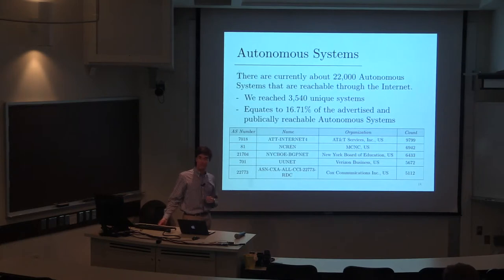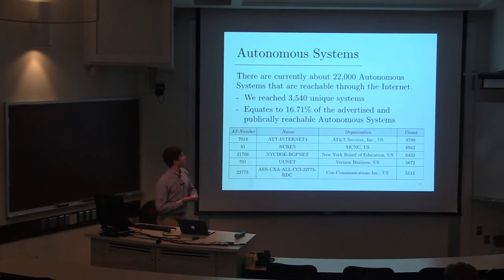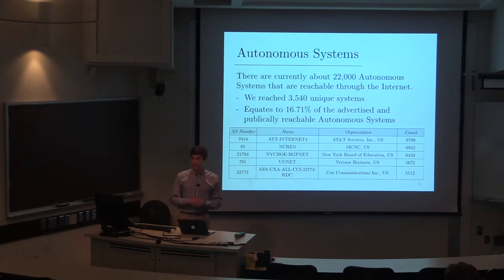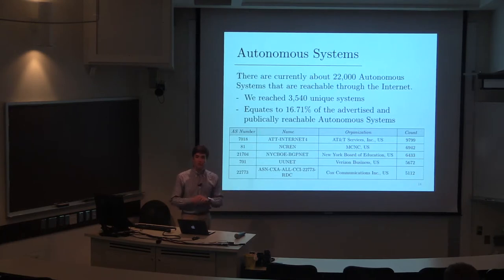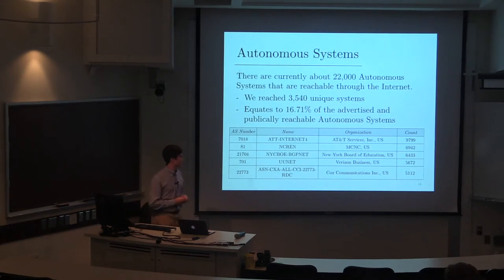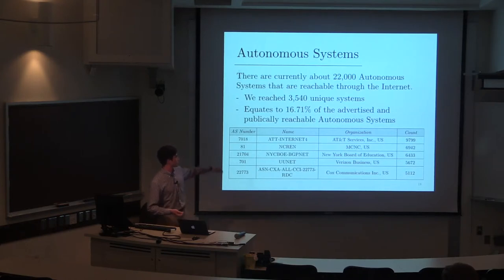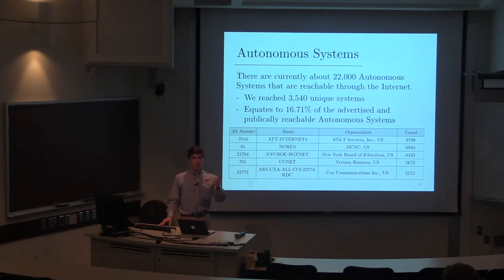I also want to talk about the autonomous systems we saw. Autonomous systems are groups of networks of computers that access the internet. According to Cisco, there are currently about 22,000 autonomous systems reachable through the internet and publicly advertised. We reached 3,540 unique autonomous systems — about 17% of publicly reachable autonomous systems. Considering we reached people across the world, that's a pretty big accomplishment for seven months on one website. Highlighted autonomous systems include AT&T, Verizon, and Cox Communications, as well as educational networks like NC-WREN and the New York Board of Education.